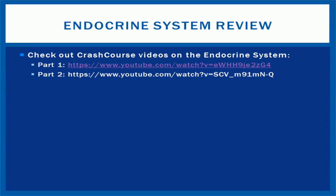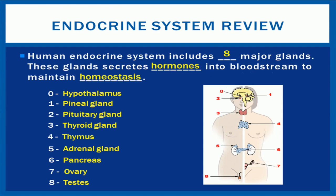Visit the links above for a good review on the endocrine system. Crash Course is a spectacular YouTube channel dedicated to science education. The human endocrine system includes eight major glands and organs which secrete hormones into the bloodstream to maintain homeostasis. Homeostasis is an equilibrium condition where bodily functions are balanced, meaning your body is working as it should.